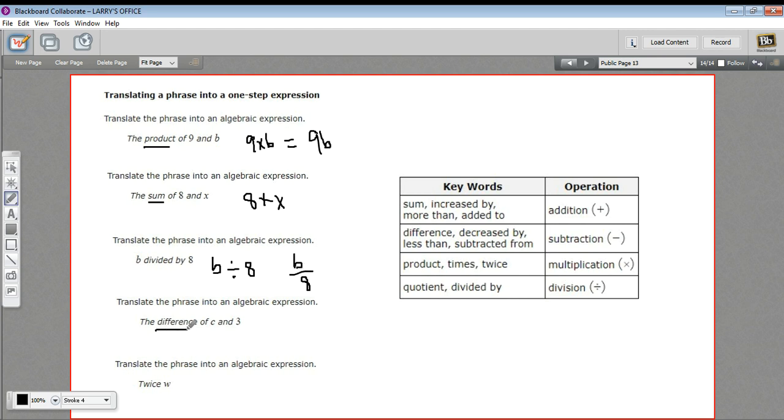The next one says the difference of c and three. Now that difference means subtraction. So we'd say c minus three.